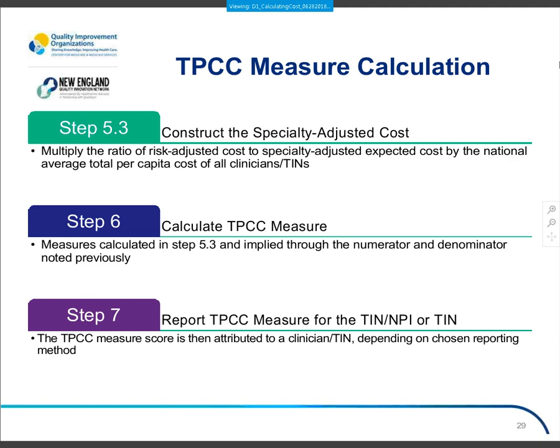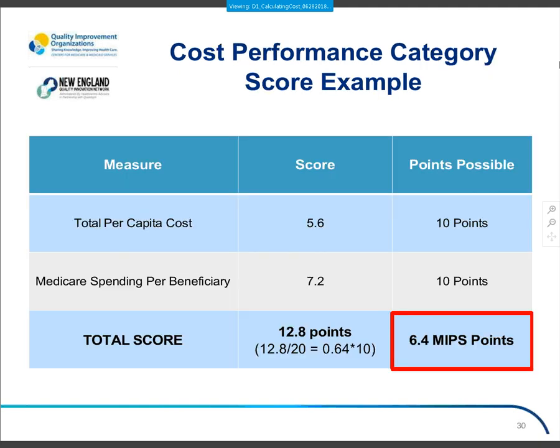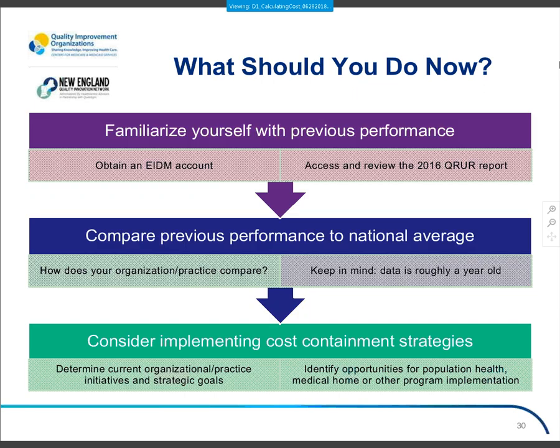For the cost performance category scoring example: each measure is worth up to 10 points. If Total Per Capita Cost earns 5.6 points and Medicare Spending Per Beneficiary earns 7.2 points, the total is 12.8 out of 20. Dividing 12.8 by 20 gives 0.64; multiplied by the 10% category weight yields a total MIPS score contribution of 6.4 points — a little more than half of the category score.